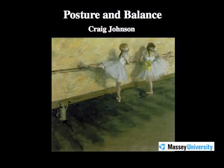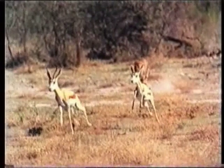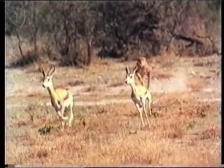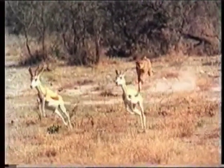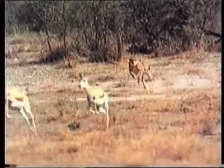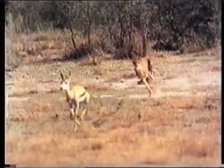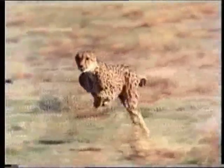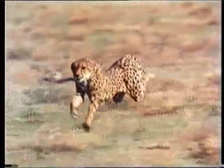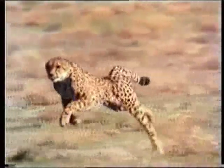Posture and balance, motor function generally — what's it all about? This is a cheetah, and if you ask me that's impressive. That's doing about 70 miles an hour, about 100 kilometers an hour on rough terrain. That's what motor function is all about.